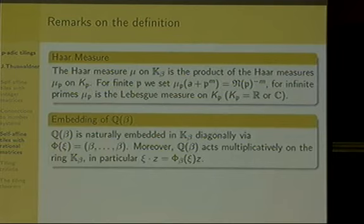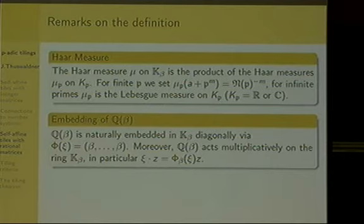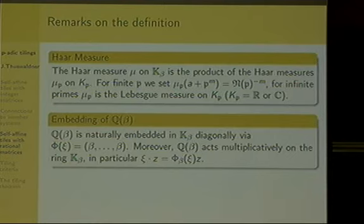To embed Q(beta) into K_beta, we do it in the standard diagonal way. If we have an element c from Q(beta), we write psi(c) in each coordinate. This is a diagonal embedding, and as number theorists know, despite being diagonal, it is dense. So Q(beta) is dense in K_beta.